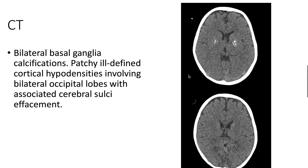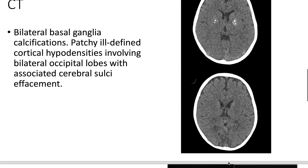On CT, we see bilateral basal ganglia calcifications and patchy, ill-defined cortical hypodensities involving the bilateral occipital lobes.